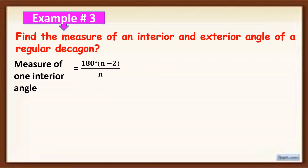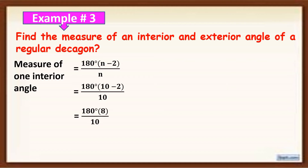We know that a regular decagon has 10 sides, so let us substitute 10 for n in the formula. It becomes 180 degrees times (10 minus 2) all over 10. Simplify inside the parenthesis: 10 minus 2 equals 8. Then 180 degrees times 8 equals 1440 degrees, divided by 10. Simplifying 1440 degrees divided by 10 gives 144 degrees. Therefore, the measure of an interior angle of a regular decagon is 144 degrees.